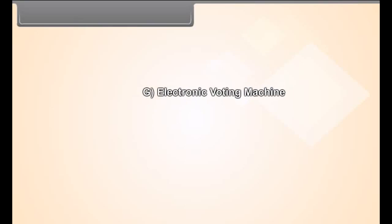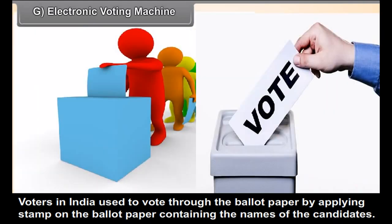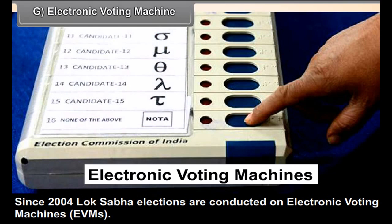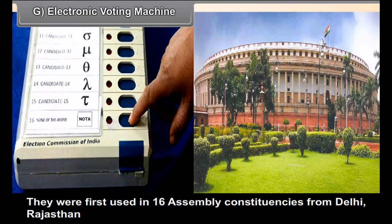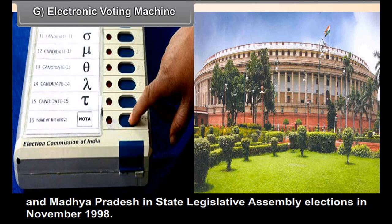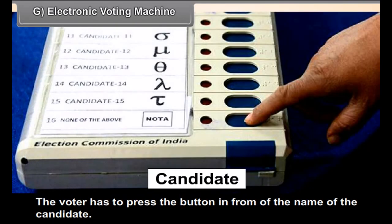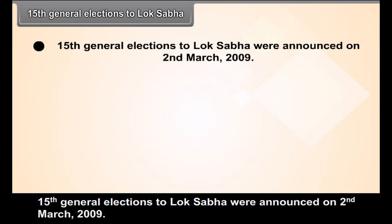Indian democracy is recognized as a representative form of democracy. People elect members of Lok Sabha, and elections are conducted normally after every five years. So far, there have been 15 elections to the Lok Sabha. The Electronic Voting Machine (EVM) is used since 2004 for Lok Sabha elections. Previously, voters used ballot papers by applying a stamp on the candidate's name. EVMs were first used in 16 assembly constituencies from Delhi, Rajasthan, and Madhya Pradesh in November 1998.